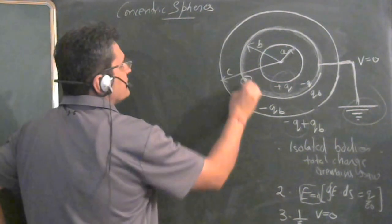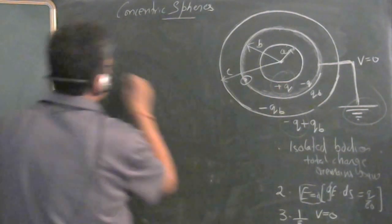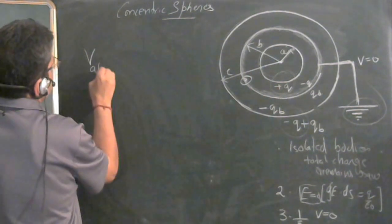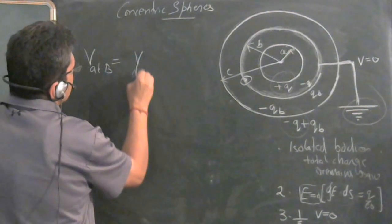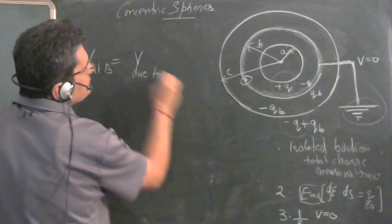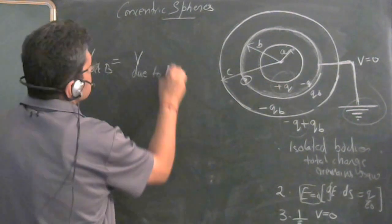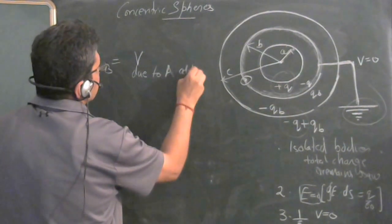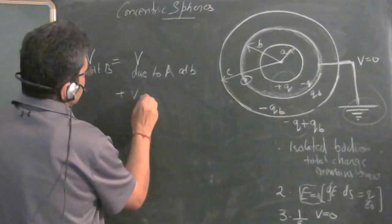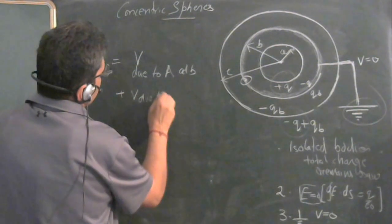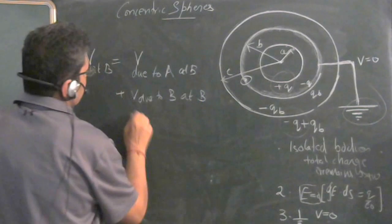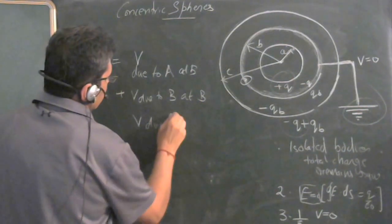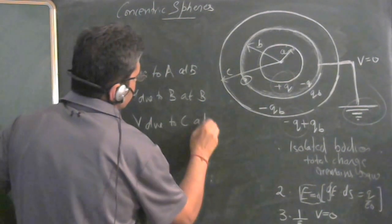Just find potential at this point. Potential at B will be V at B would be V due to A at B plus V due to B at B and V due to C at B.